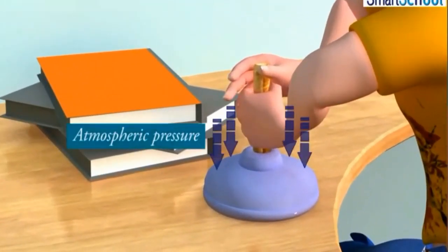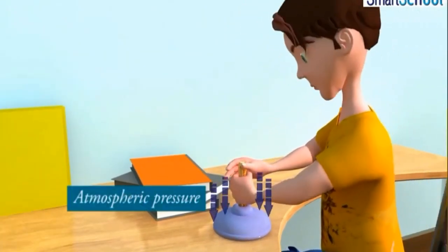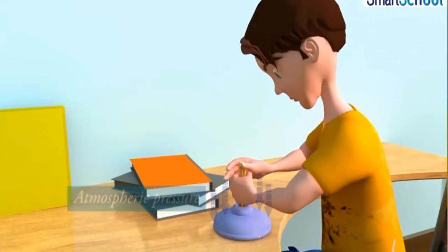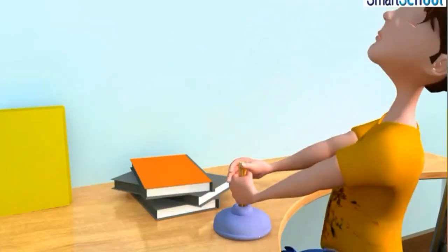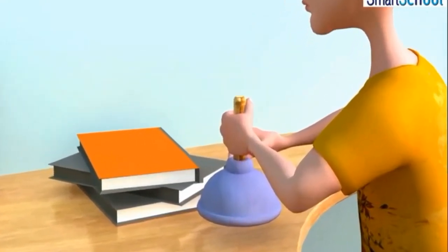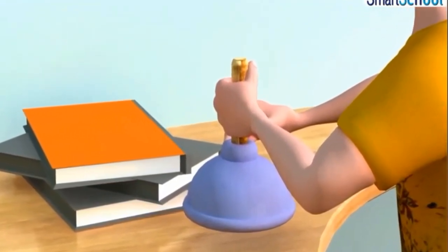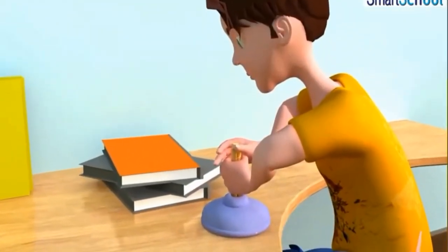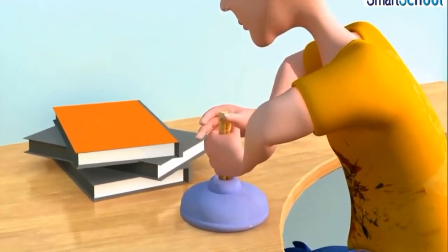Rubber suction pads are used for hanging calendars and cloths from the walls. When a moistened suction pad is pressed against a flat surface, the air is forced out of the sucker, so there is no air inside. This reduces the atmospheric pressure within the sucker, whereas the outside atmospheric pressure being much larger forces the sucker on the wall and the suction pad gets pressed against the wall strongly.